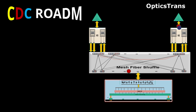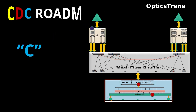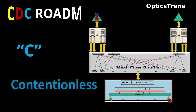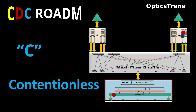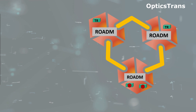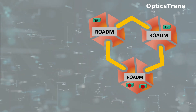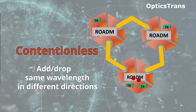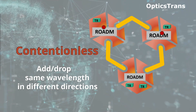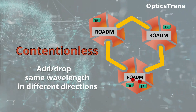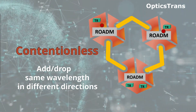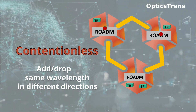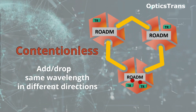In this video, I explain CDC, which is contentionless, and why a contentionless network is required. Before we go further, let's define contentionless. A ROADM site is contentionless if it is possible to simultaneously add and drop the same wavelength in different directions.